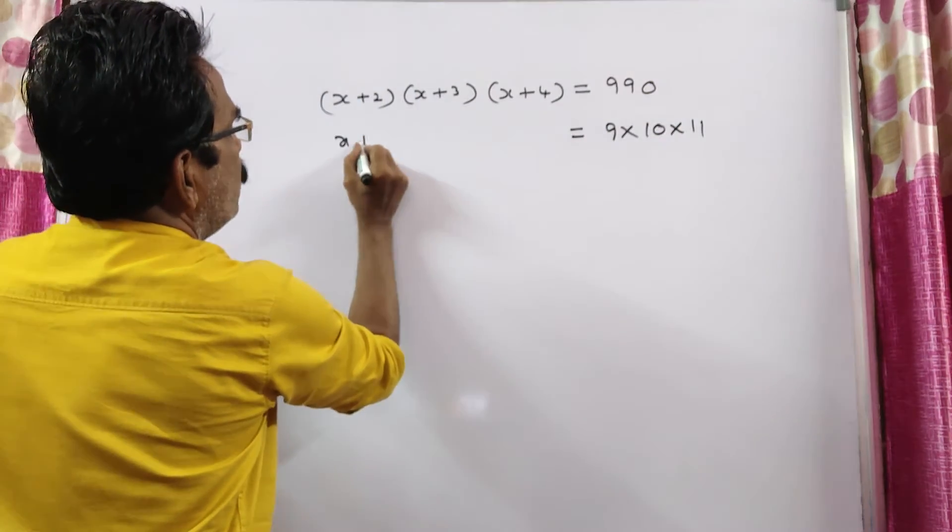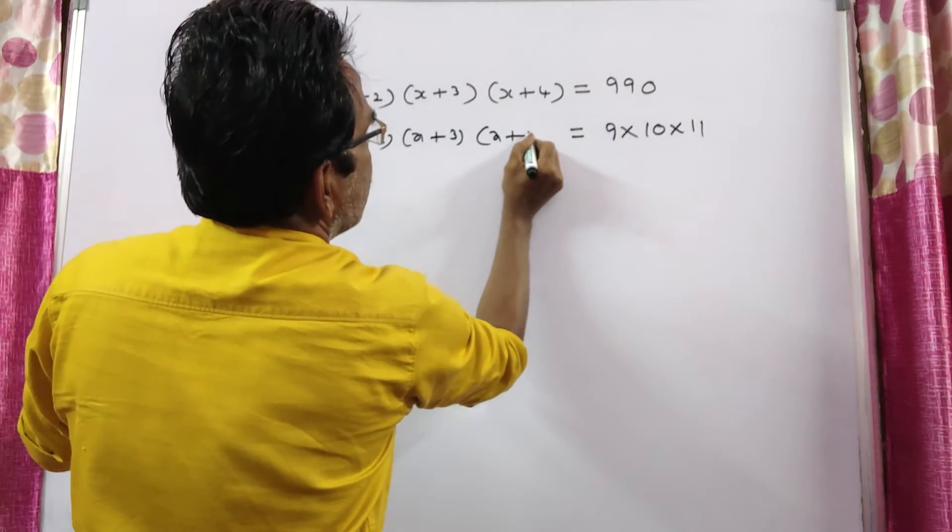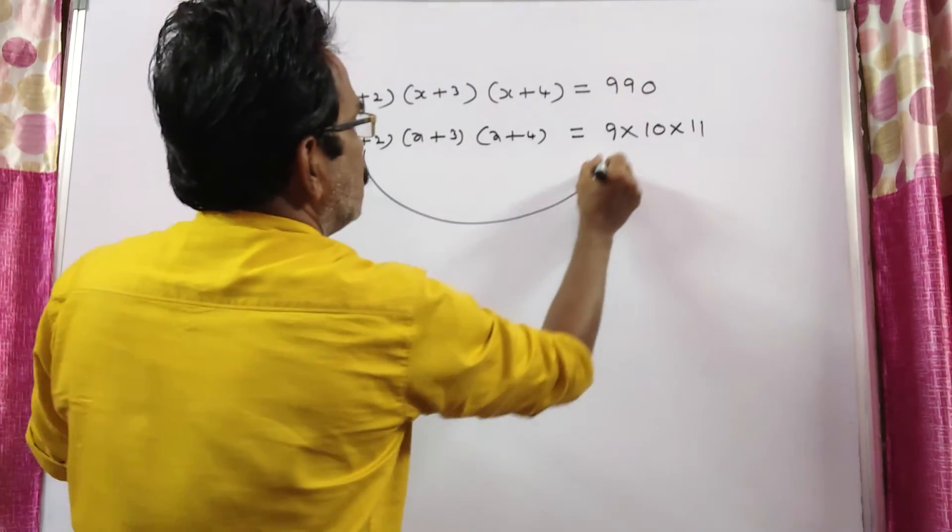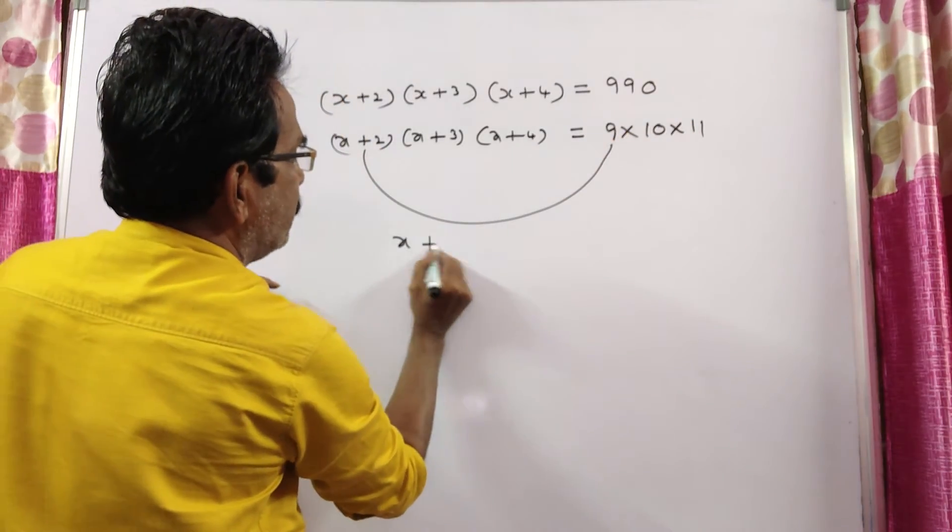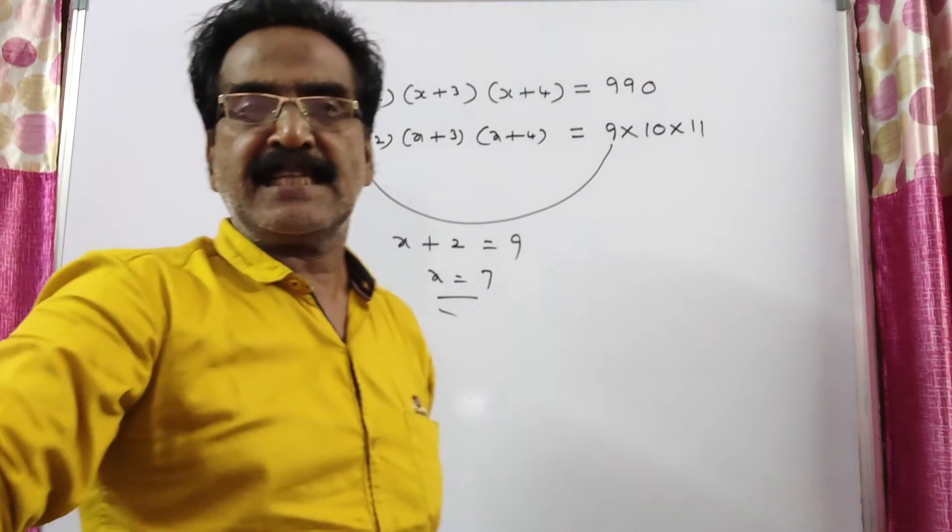x plus 2 into x plus 3 into x plus 4 is equal to 9 into 10 into 11. So, x plus 2 is equal to 9, x is equal to 7.